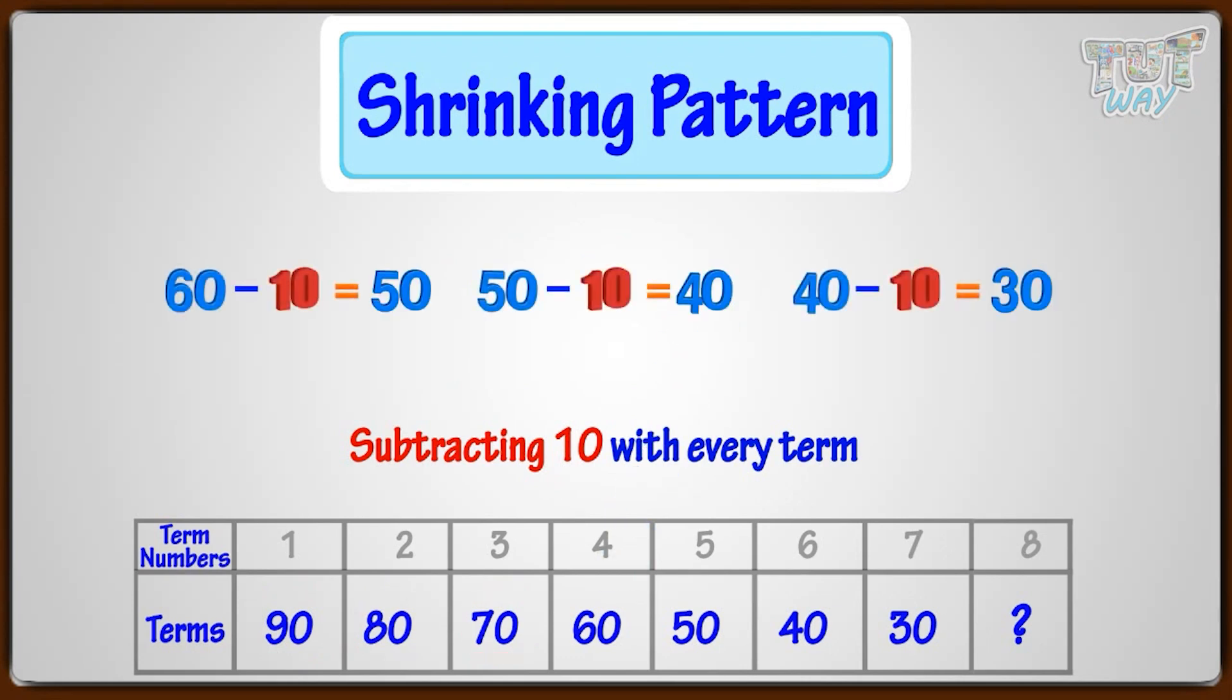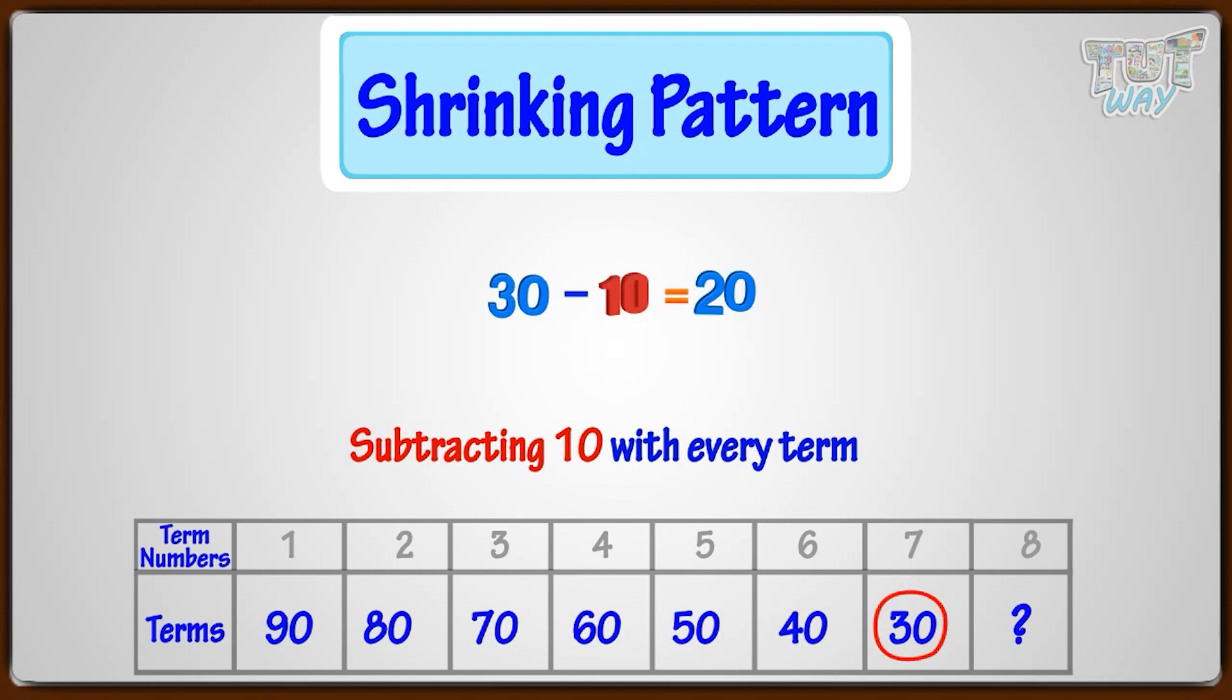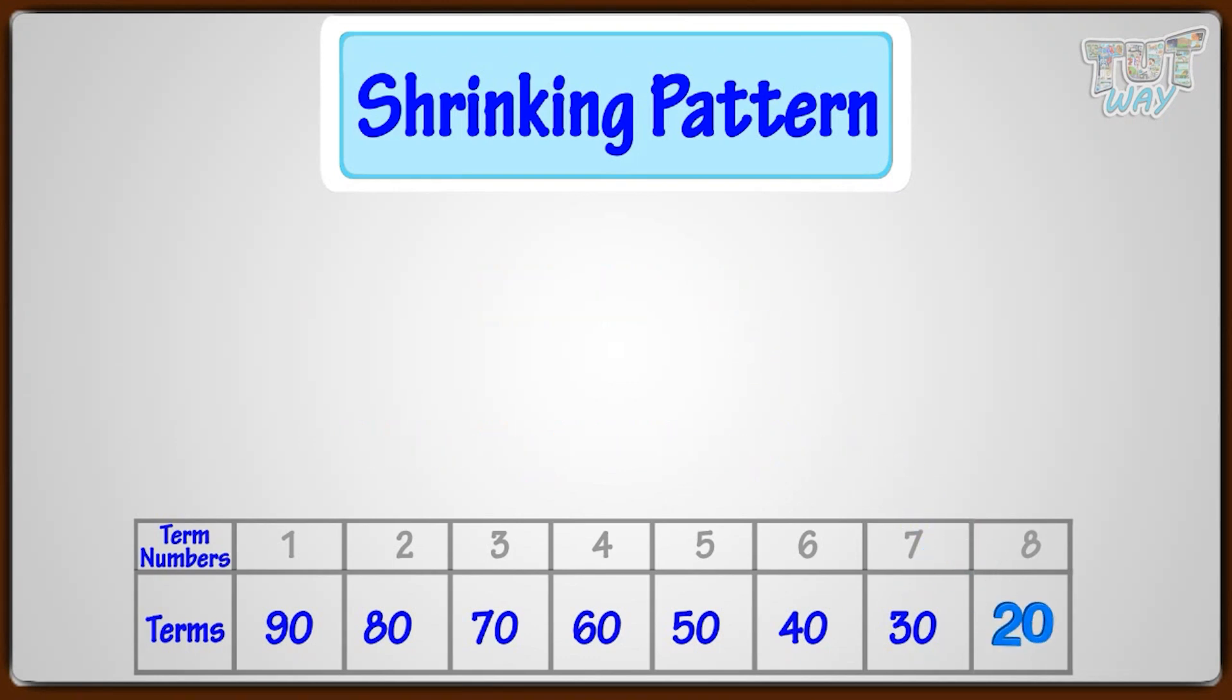So the next eighth term would be subtracting 10 from the seventh term. 30 minus 10, that is 20. So the eighth term would be 20. Let's have a look at more shrinking patterns.